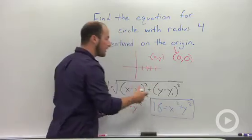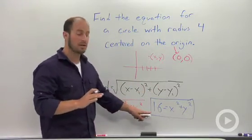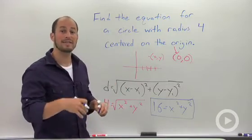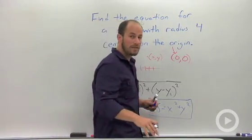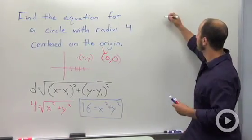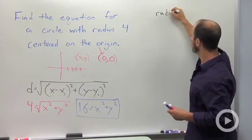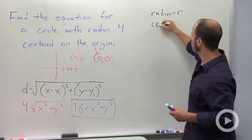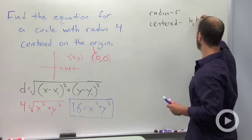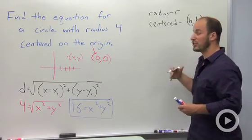That is the equation for this specific circle. Now let's look at the general equation. For a general equation, we have radius r and we are centered around the point (h, k).